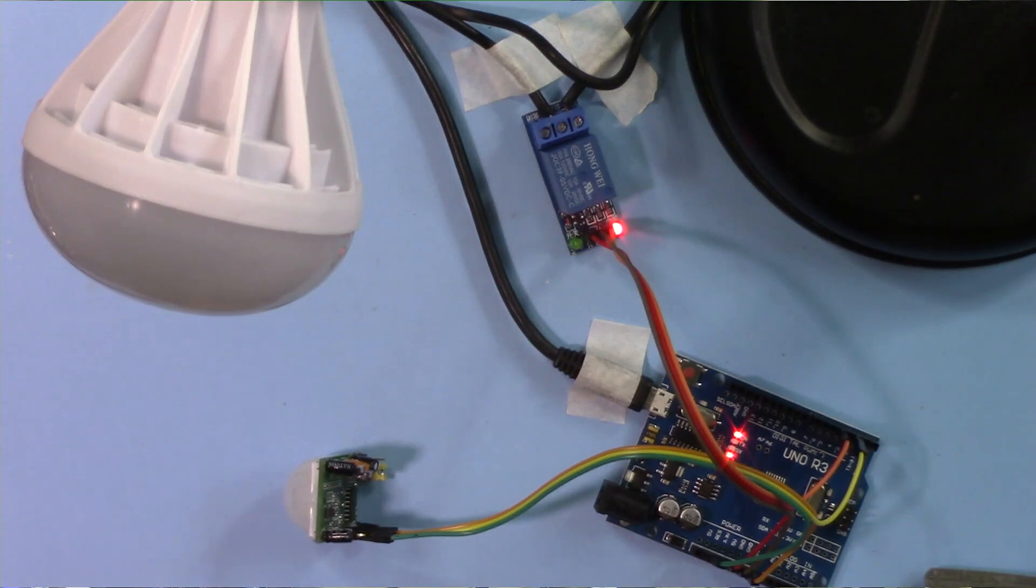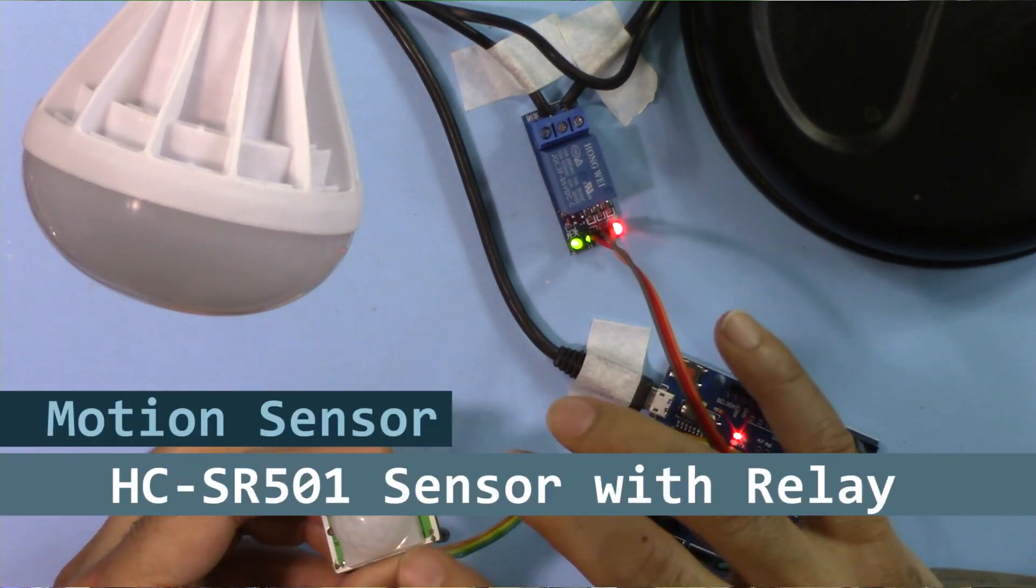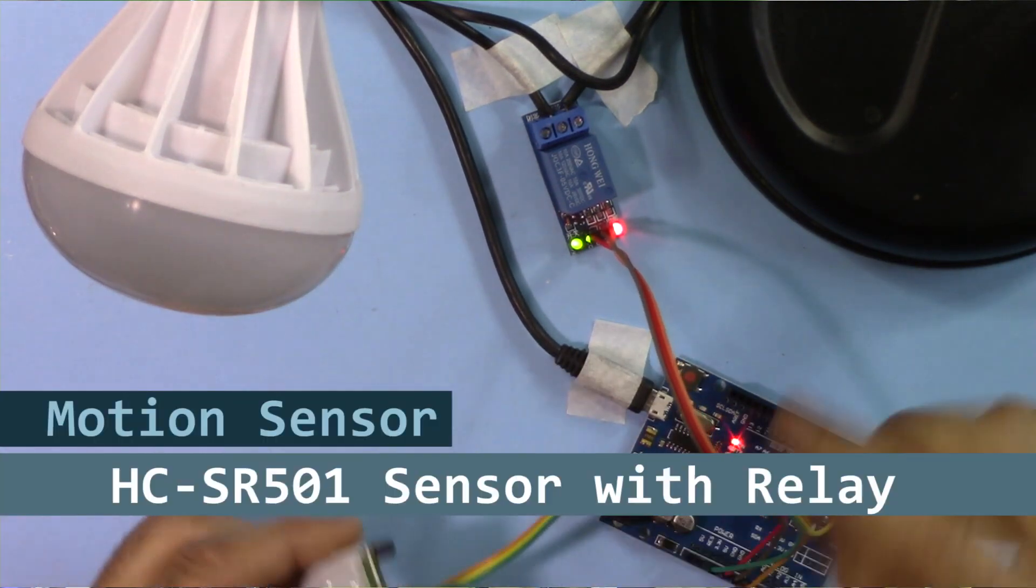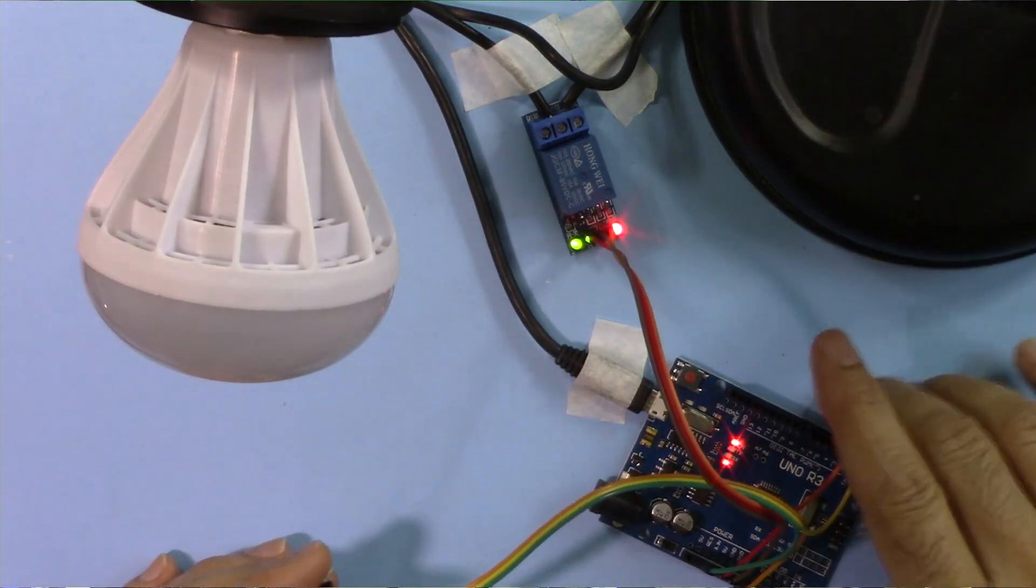Hi, welcome to an Arduino tutorial from Robojax. In this video we are going to see how we can use this HC-SR501 motion sensor with a relay to control an AC bulb, alarm, or another load using Arduino.